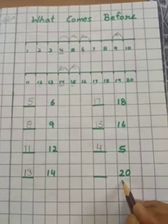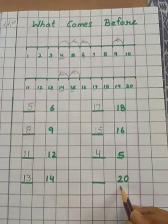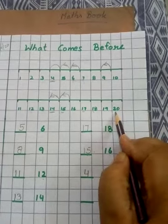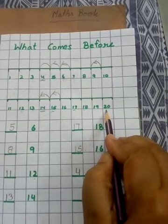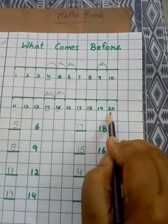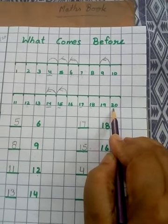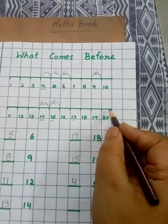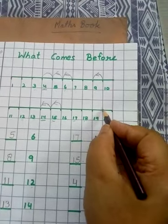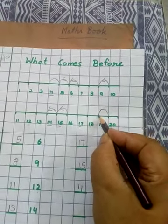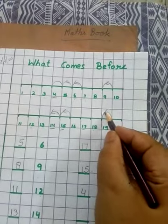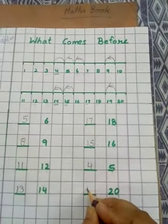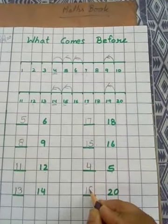Next number is 20. Look at the number line. 20 is here — 20 यहाँ पर है. और हम फिर से backward direction में count करेंगे. Backward direction में जब जाएंगे तो 20 से just next कौन सा number आएगा in the backward direction? It's 19.